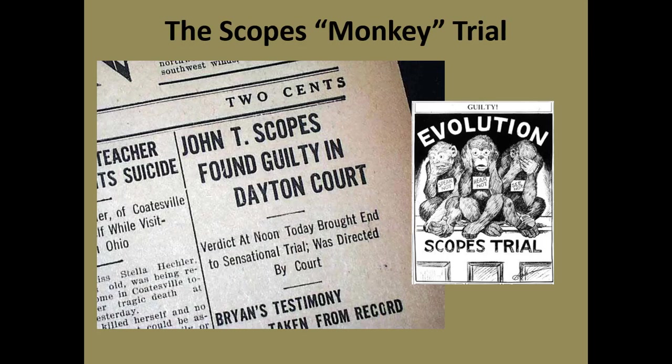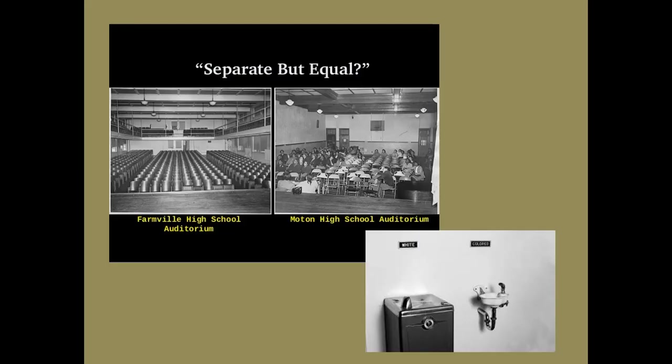Plessy is the precursor to Rosa Parks. Both were planned events to bring discrimination into the courts by forcing the courts to make a precedent, so following cases would have a precedent to refer to. They had confidence the 14th Amendment would stand up and they'd be successful — but it kind of backfired. The Supreme Court ruled that you could be separate as long as you're equal.